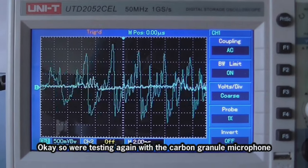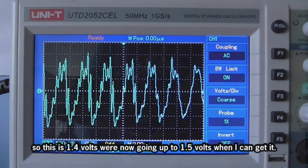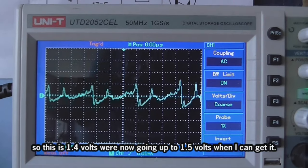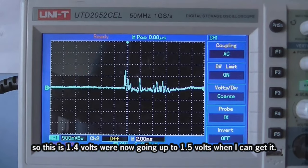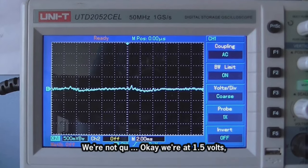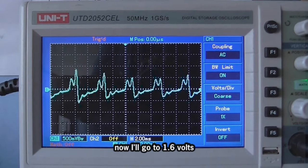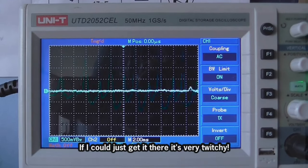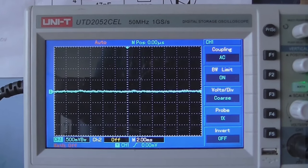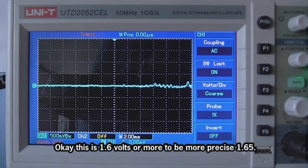Okay, so we're testing again with the carbon granule. So, this is 1.4 volts. We're now going to go up to 1.5 volts when I can get it. Okay, we're at 1.5 volts. We're going to 1.6 volts. If I could just get it there, it's very twitchy here. Okay, this is 1.6 volts.